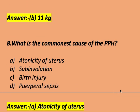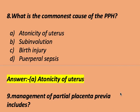What is the commonest cause of PPH or postpartum hemorrhage? Options: atonicity of uterus, sub-involution, birth injury, and puerperal sepsis. The right answer is atonicity of uterus. The commonest cause of postpartum hemorrhage is atonicity of uterus.